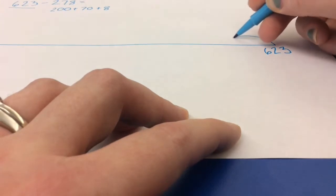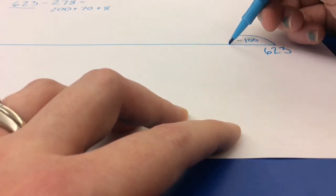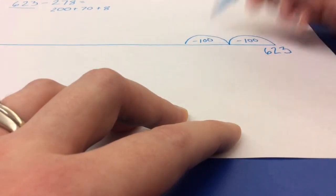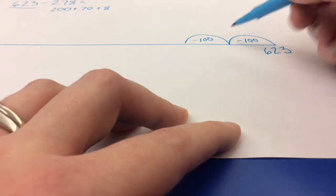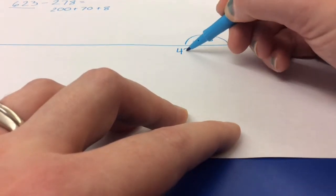So first I take away 100. Then I take away another 100. And I have 423.